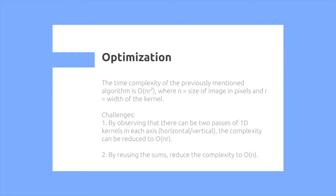Some challenges, if you're interested: you can actually observe that there can be only two passes of 1D kernels in each axis, horizontal and vertical, reducing the time complexity to O(n*r), and also by reusing the sums, we can reduce the complexity to O(n).